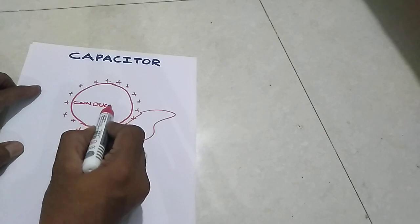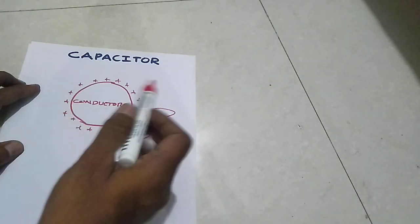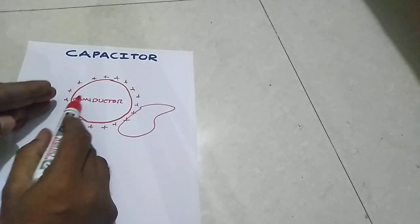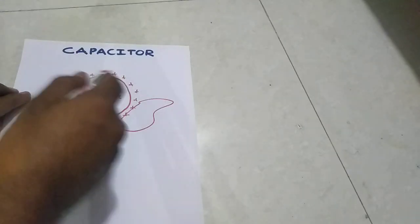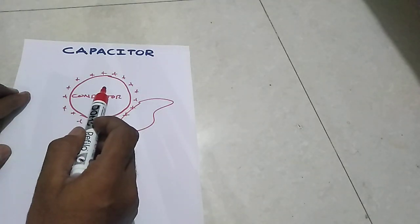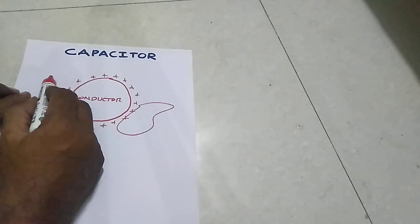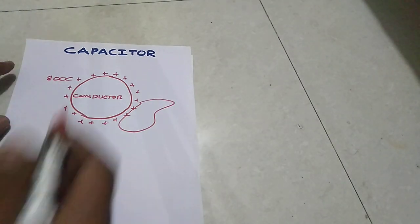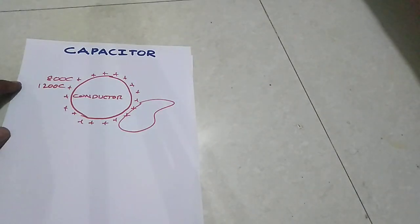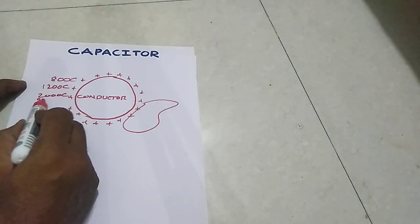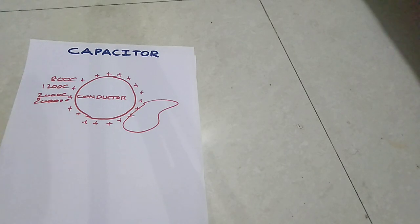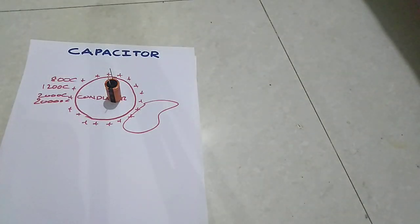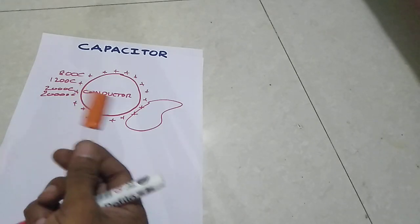This is a conductor — any metal. There is some charge, so there should be some capacity or some maximum limit for this conductor by which we can give charge to it. Let us say I have given around 800 coulombs of charge. Now I want to increase the charge to 1200 coulombs, 2000 coulombs, 20,000 coulombs — is it possible to give infinite charge to this conductor, or should there be a limit? Can we give infinite charge to this capacitor?